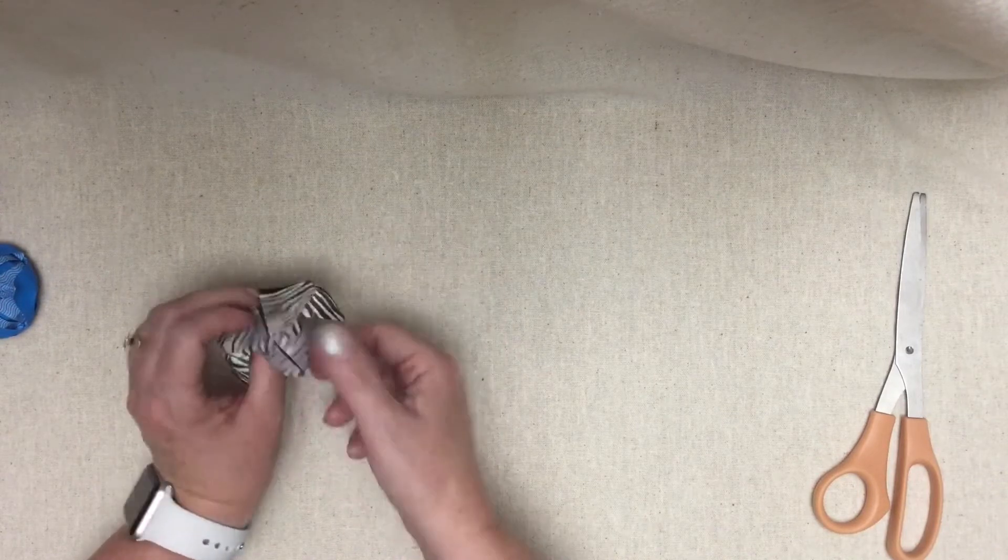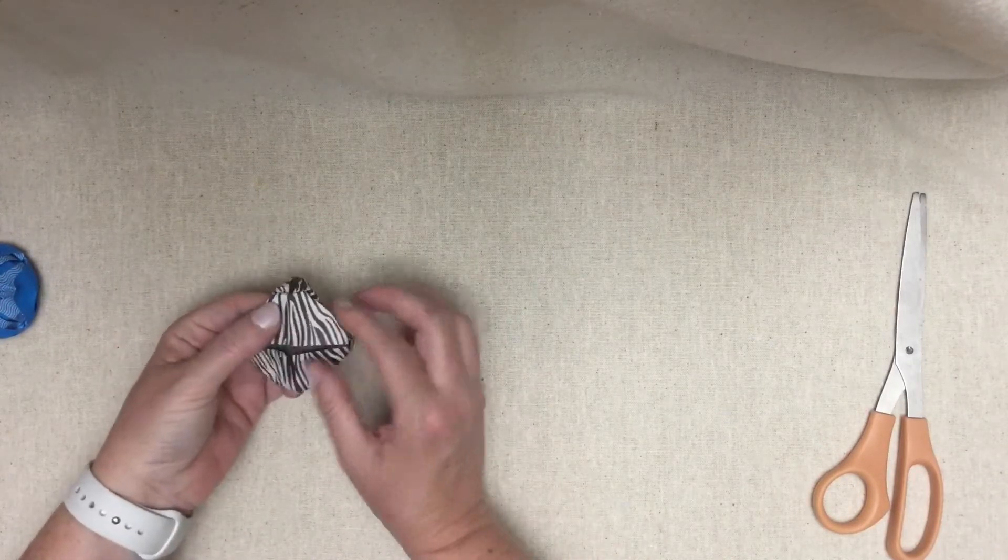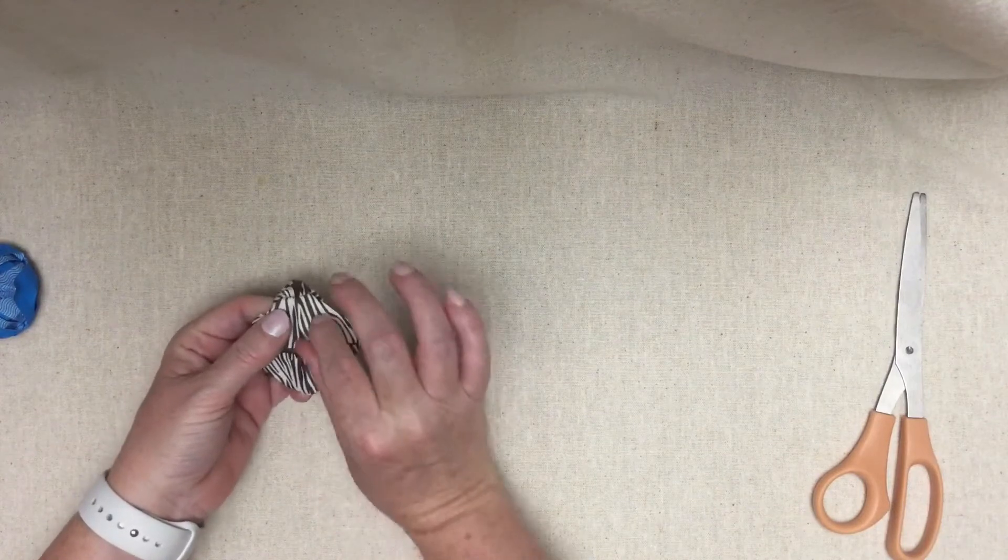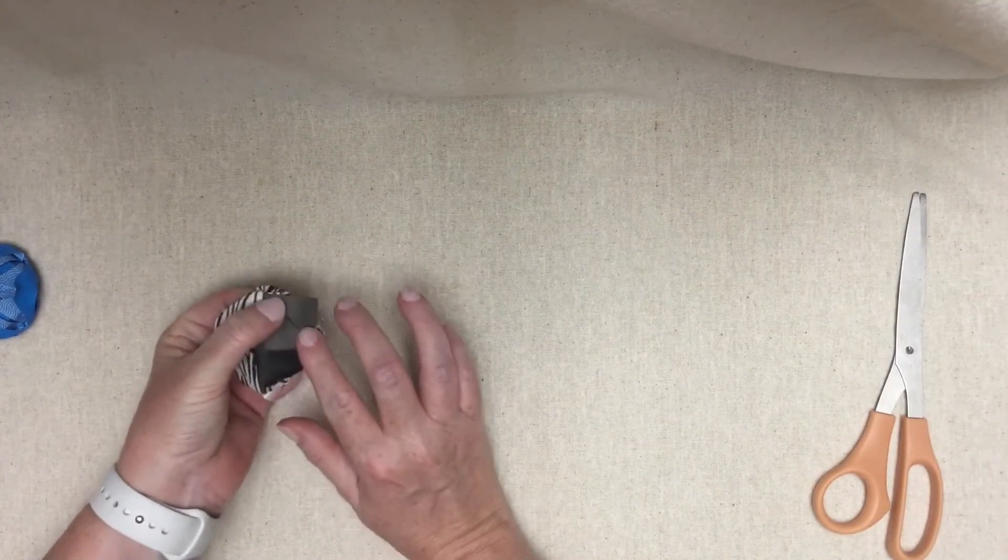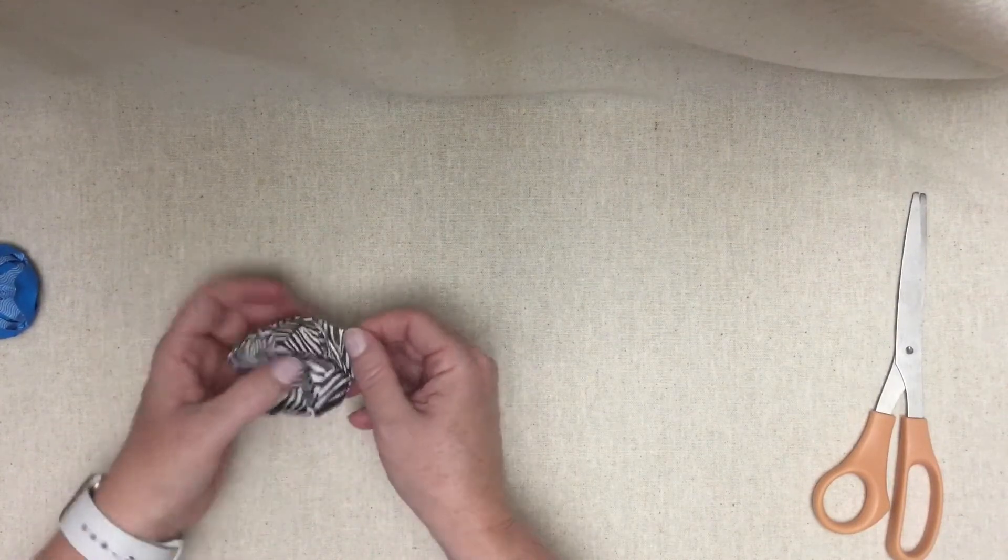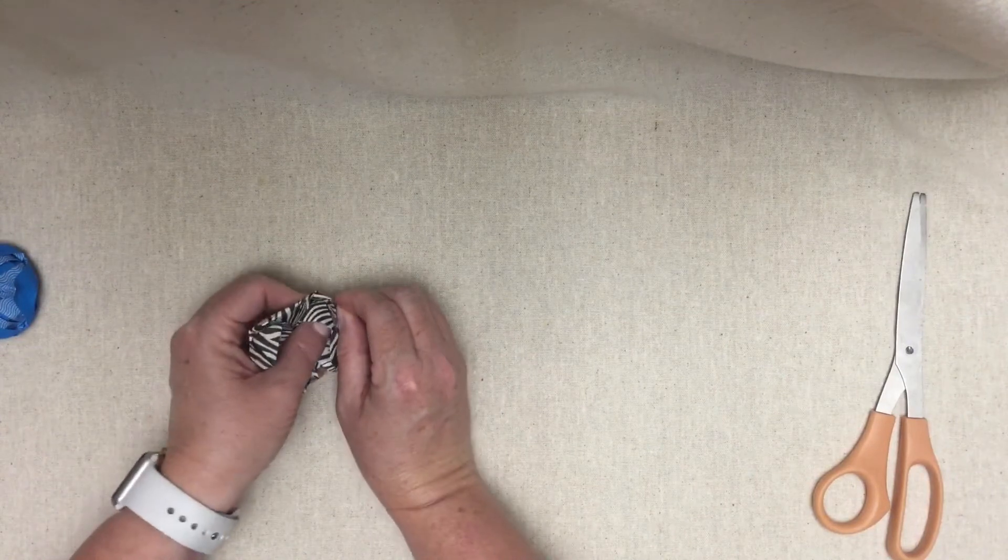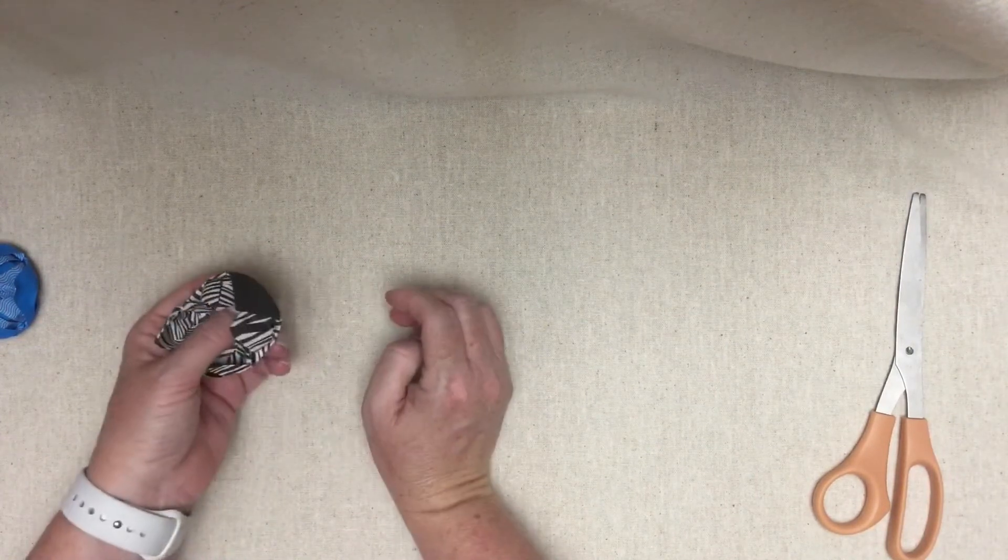Now we're going to do the outer petals. Once again, from the bottom of the flower, fold the petal outward and crease it. Pinch the base and gently pull upward on the tip of the petal.